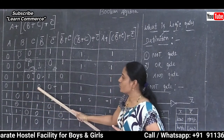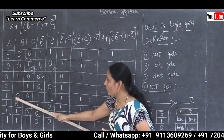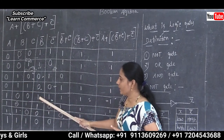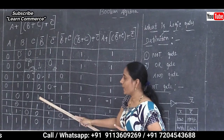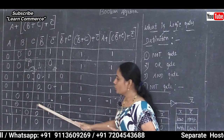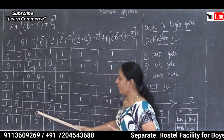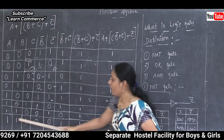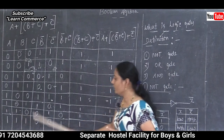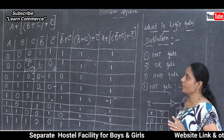Continuing the complement B values: 1 changes to 0, 0 changes to 1, 1 changes to 0, and finally 1 changes to 0.